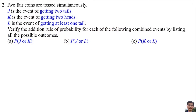Number 2: Two fair coins are tossed simultaneously. J is the event of getting 2 tails, so the element is TT. K is the event of getting 2 heads, so the element is HH. L is the event of getting at least 1 tail, so the elements are HT, TH, and TT.